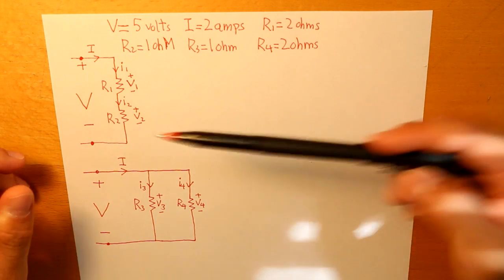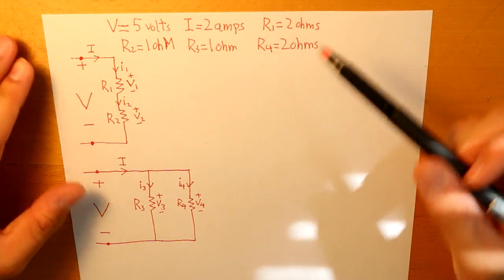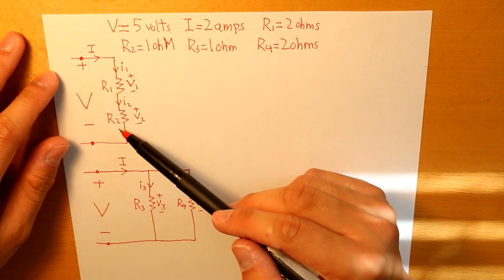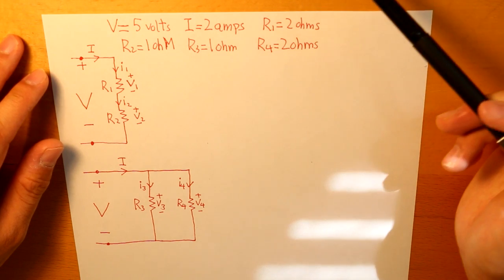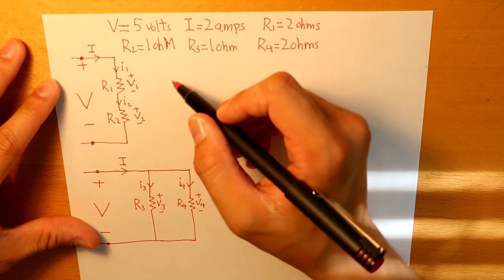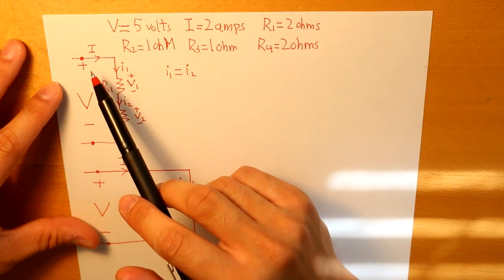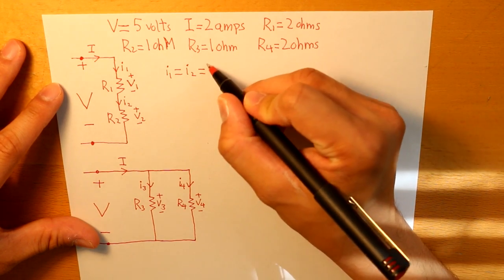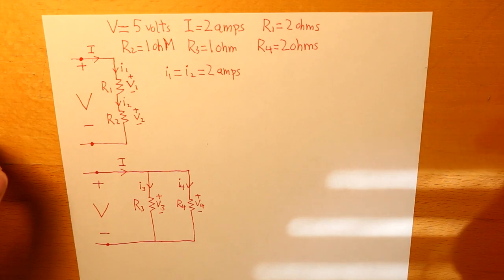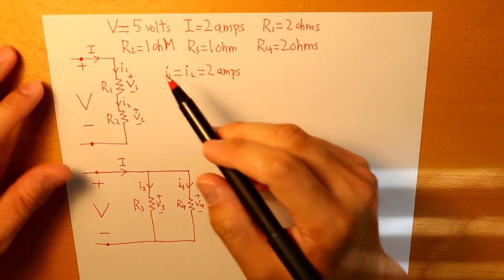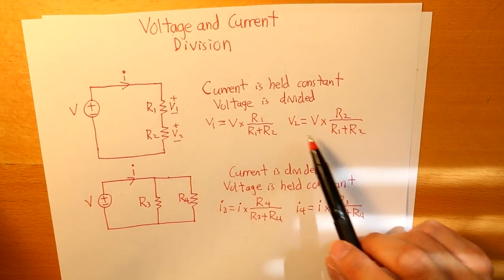Let's start with the first circuit — a series resistor circuit. Current is held constant no matter where it is flowing through. So simply speaking, I1 and I2 are both equal to the total current, which is 2 amps. Voltage is going to be divided in this situation, so we'll use the voltage divider equation to find V1 and V2.